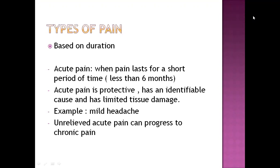In types of pain, pain can be divided on the basis of duration into acute pain and chronic pain. Acute pain lasts for less than six months. It is generally not associated with tissue damage, or if there is tissue damage, it is a limited amount — like minor injury, minor wound, or mild headache. If acute pain is left untreated, it can progress directly to chronic pain.